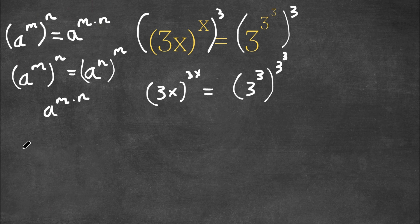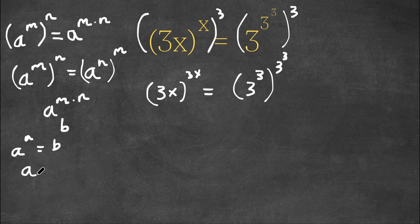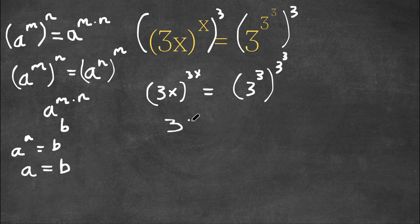Now, if we have something in the form a to the power of a is equal to b to the power of b, then this means that a is equal to b. As you can see here, 3x to the power of 3x — both of these are the same. The exponent and the base are the same. And same with here, 3 to the power of 3 to the power of 3 to the power of 3 — the exponents here are the same.